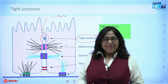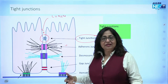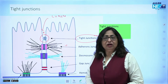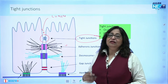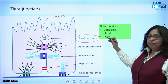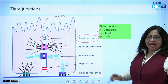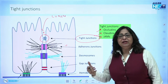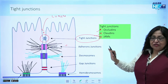Tight junctions are not only found between the Sertoli cells as mentioned earlier, but you also have tight junctions between the intestinal epithelial cells, towards the luminal side. These tight junctions are made of proteins which are called occludins, claudins, and JAMs — the full form of JAMs is Junctional Adhesion Molecules. These are your tight junctions.